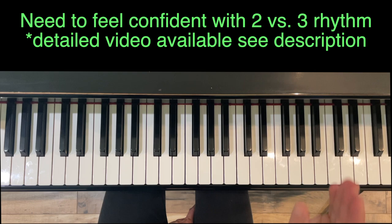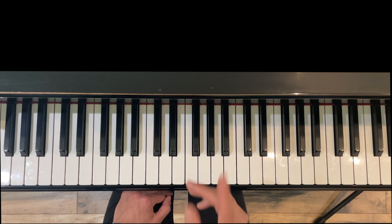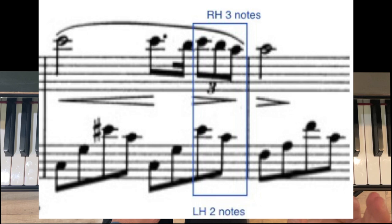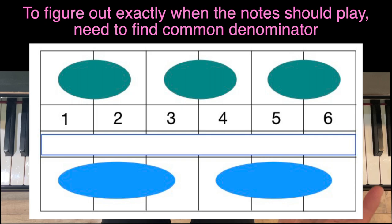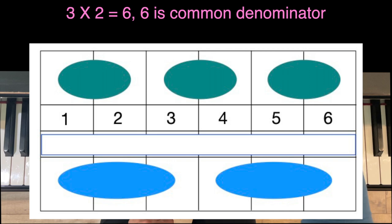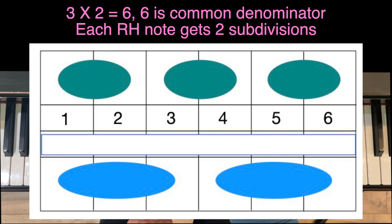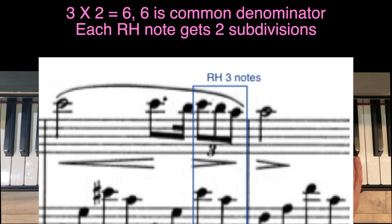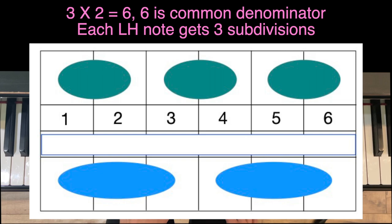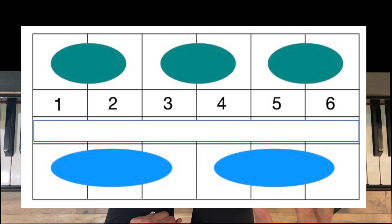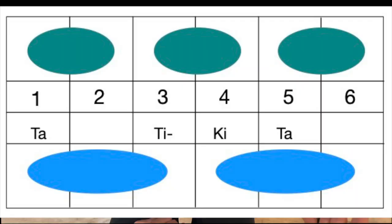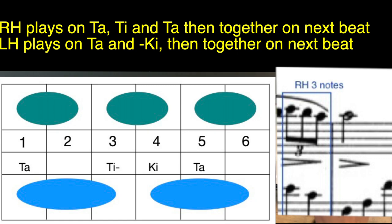The main rhythm to feel confident with is the two-against-three rhythm — I have a whole video on this. You'll see the first instance of three against two in beat four of measure five: the right hand has three notes grouped as a triplet, and the left hand has just two notes. To find exactly where the notes hit, find the common denominator: three times two is six. I like to say 'ta tiki ta' instead of counting one through six, so it would be 'ta tiki ta ta.'